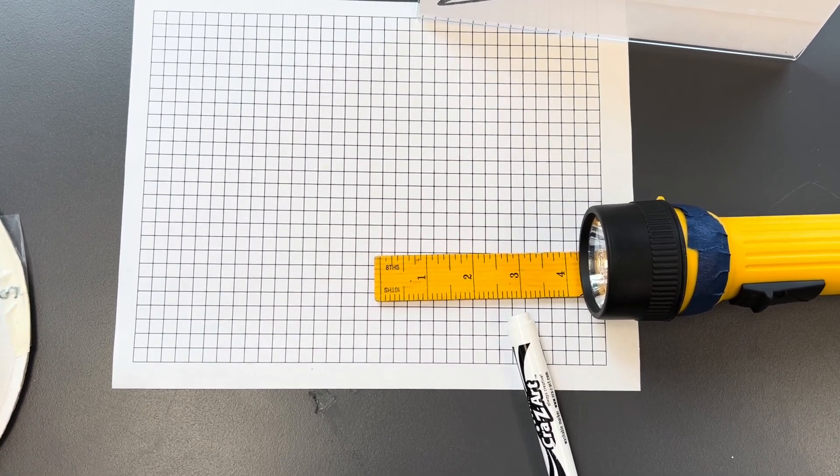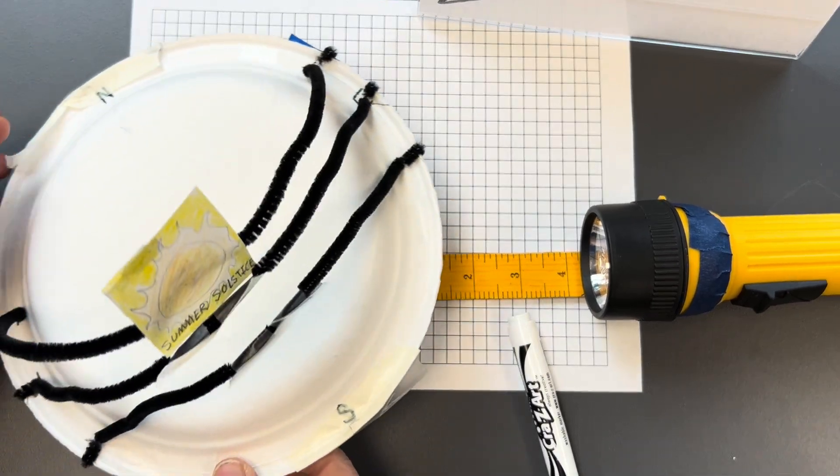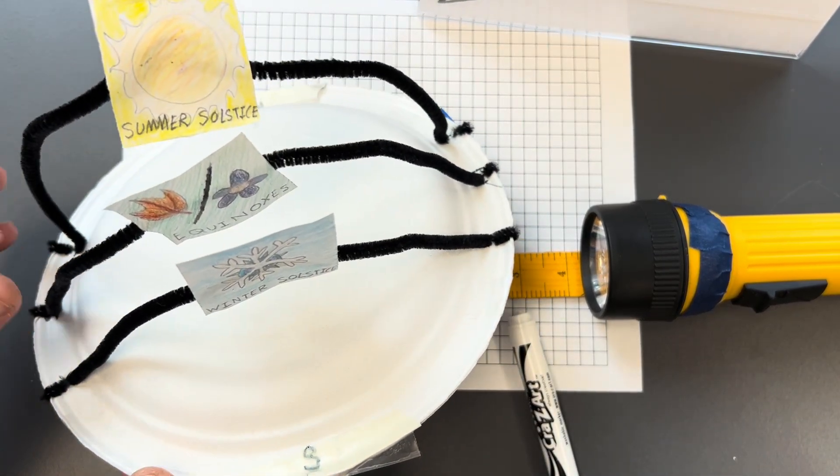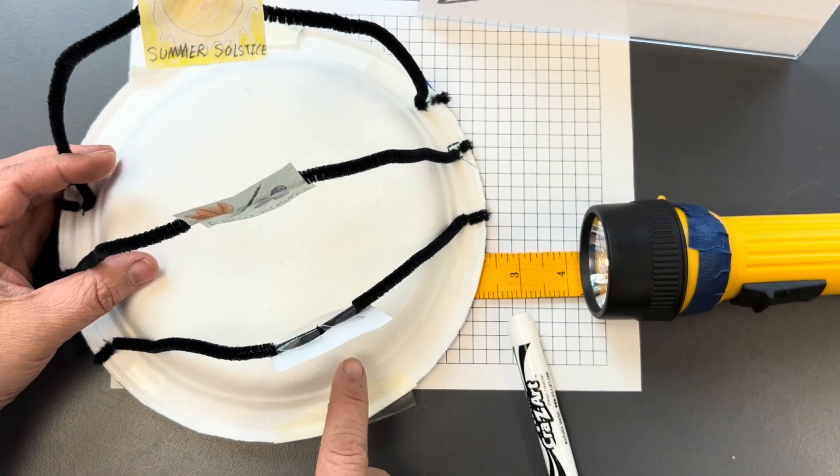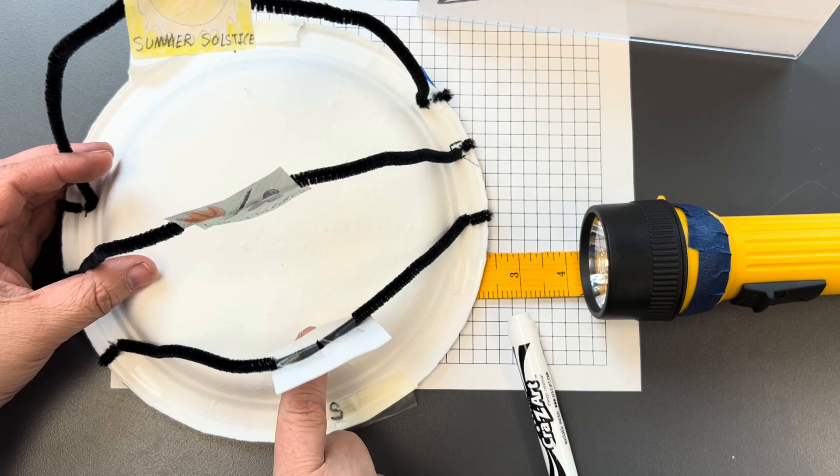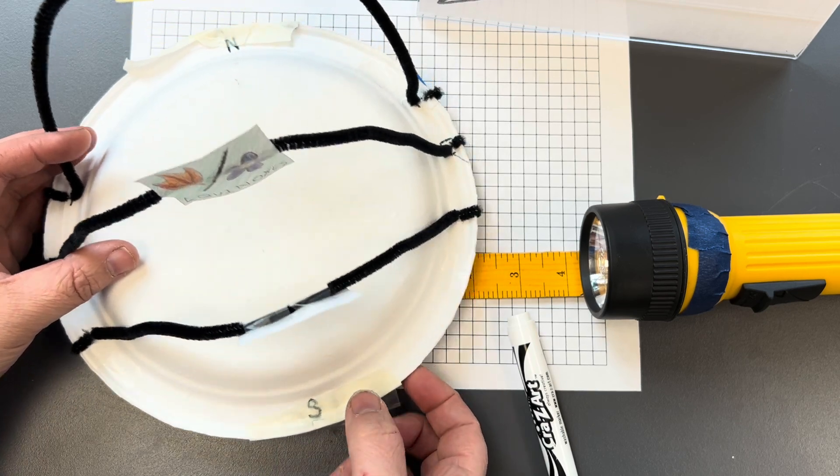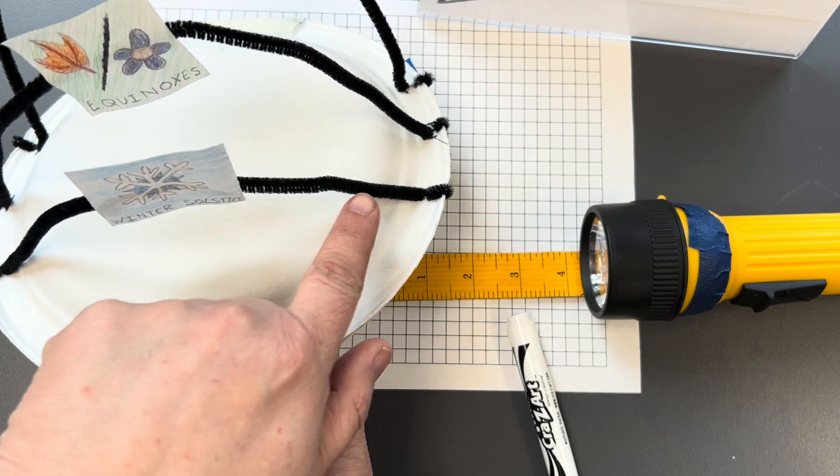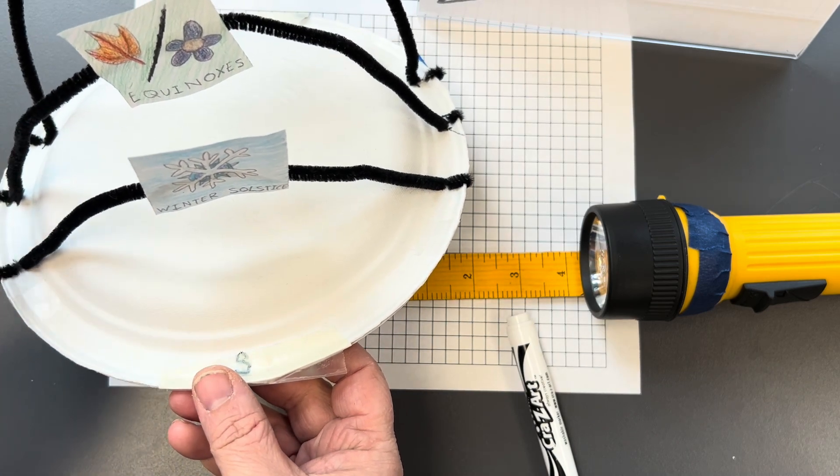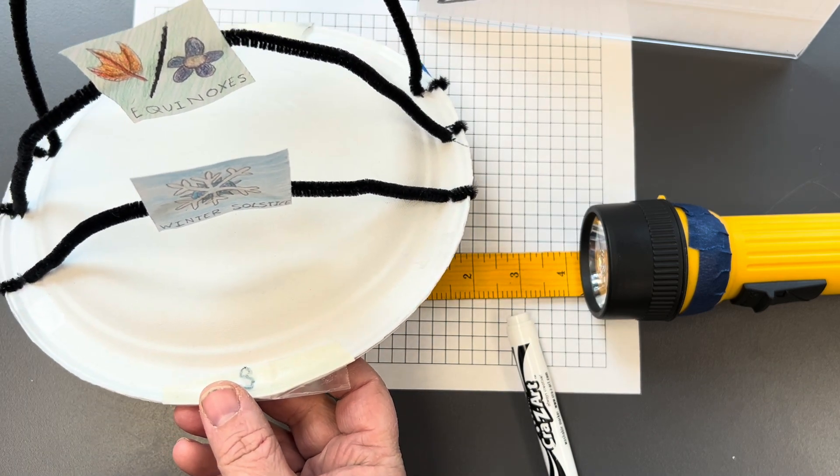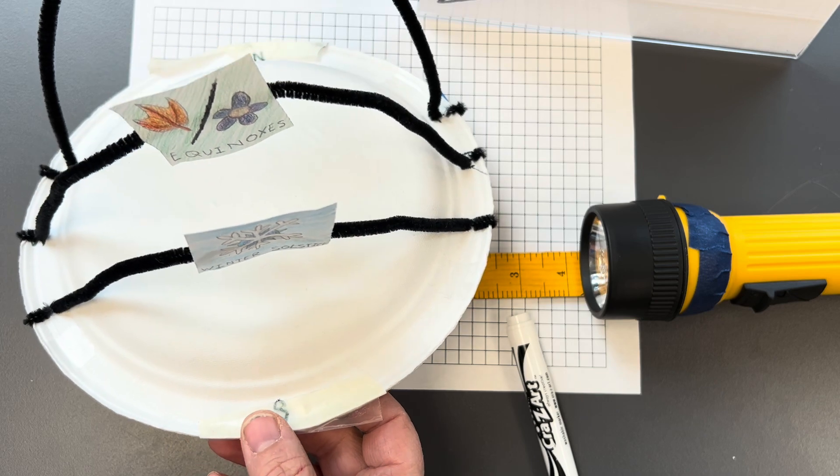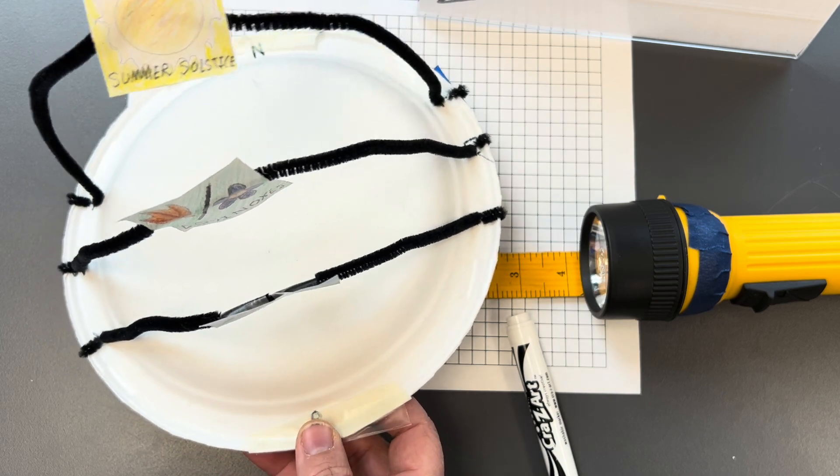So to begin, I want to show you this model that was created by one of your colleagues. On this model, we have basically this flat area representing the surface of our earth. And then we have these black pipe cleaners, and these are representing the path that the sun takes at different times of year.